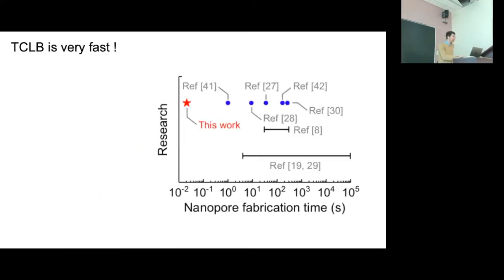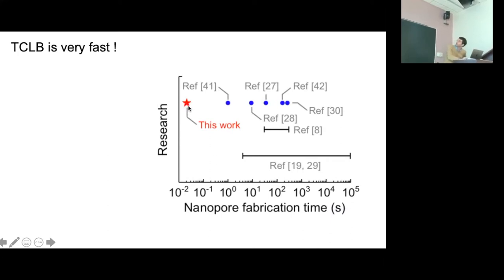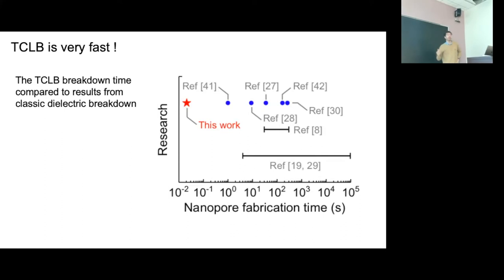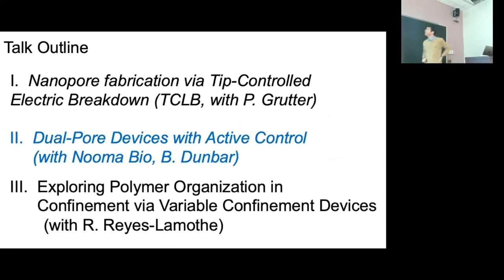From an applications standpoint, tip-controlled local breakdown is really fast. Classic dielectric breakdown operates on timescales of 10 milliseconds to 100 seconds, whereas our technique is two orders of magnitude faster. The time to make an array is dominated by the time it takes to move the AFM tip. It takes about 25 minutes to make 400 pores, about 16 points per minute.